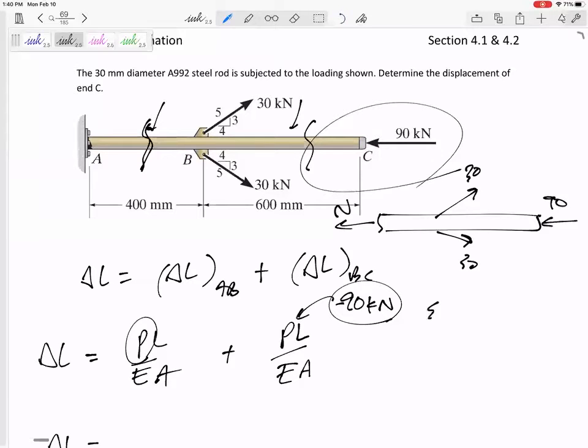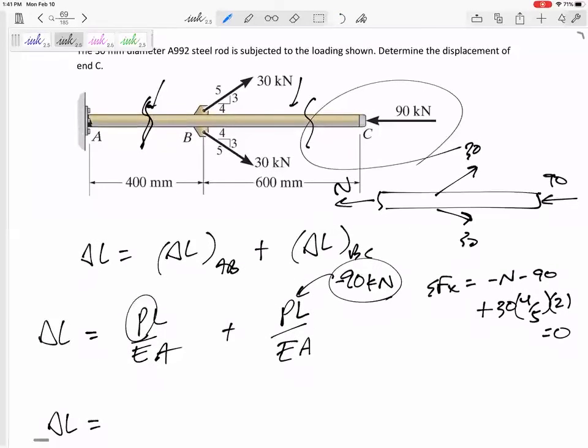And summing the forces in the X direction, negative N, negative 90, and 30, the 4 fifths component, and I've got two of those, equals zero. N negative 42. Negative 42, so it still is 42 kilonewtons compression.